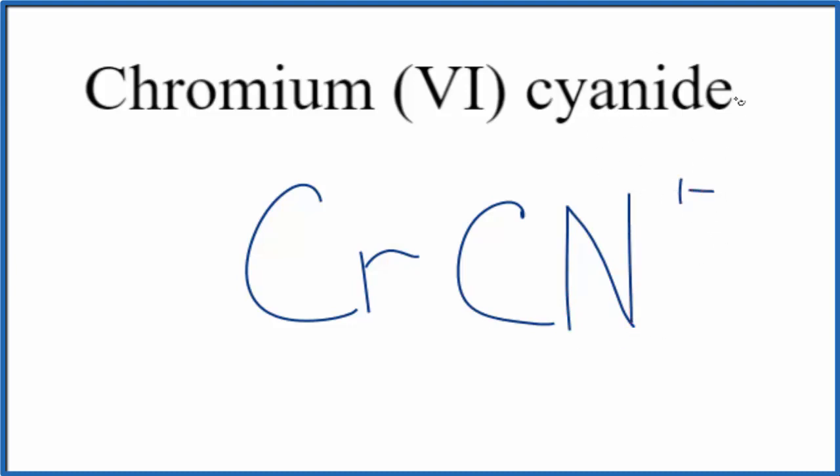Or if you're allowed, you look it up on a table of polyatomic ions. So we have our cyanide, the whole thing with a 1- ionic charge, and this Roman numeral VI, that's 6. That means the charge on the chromium is 6+.